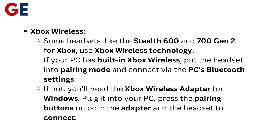For Xbox wireless, some headsets like the Stealth 600 and 700 Gen 2 for Xbox use Xbox wireless technology. If your PC has built-in Xbox wireless, put the headset into pairing mode and connect via the PC's Bluetooth settings. If not, you will need the Xbox wireless adapter for Windows — plug it into your PC and press the pairing buttons on both the adapter and the headset to connect.